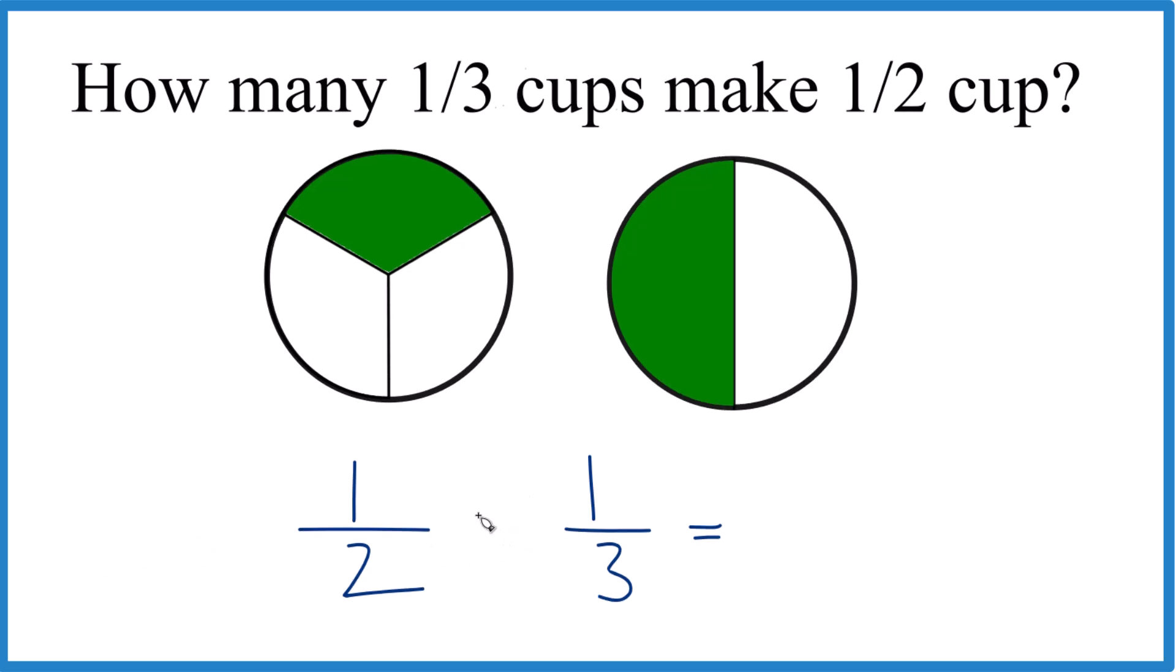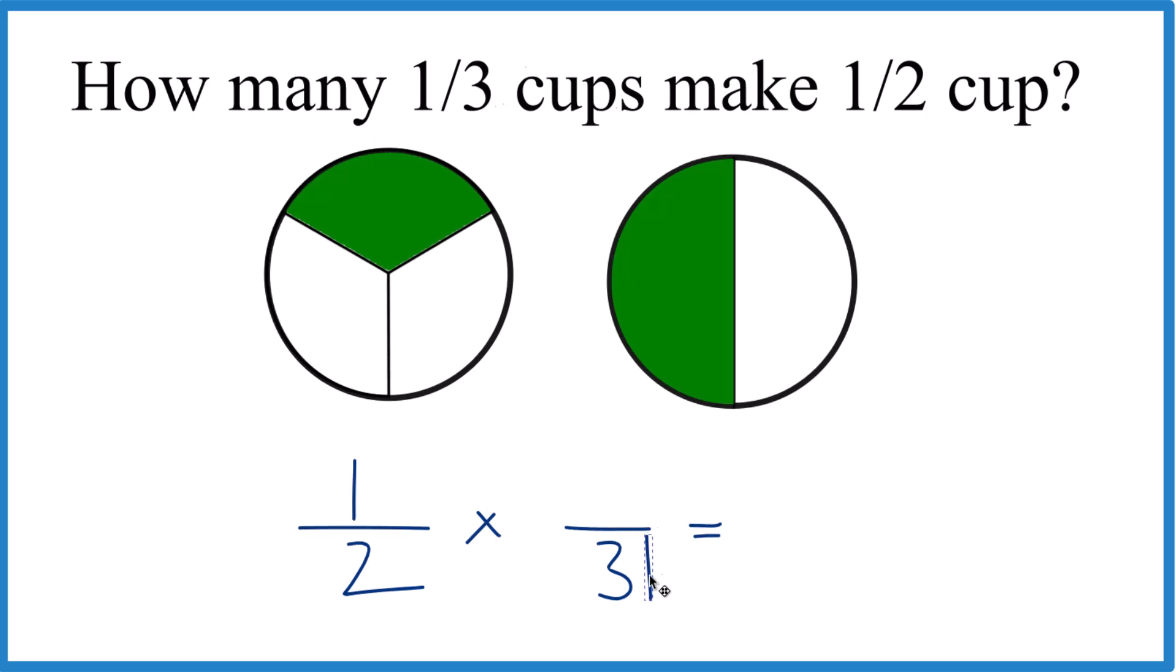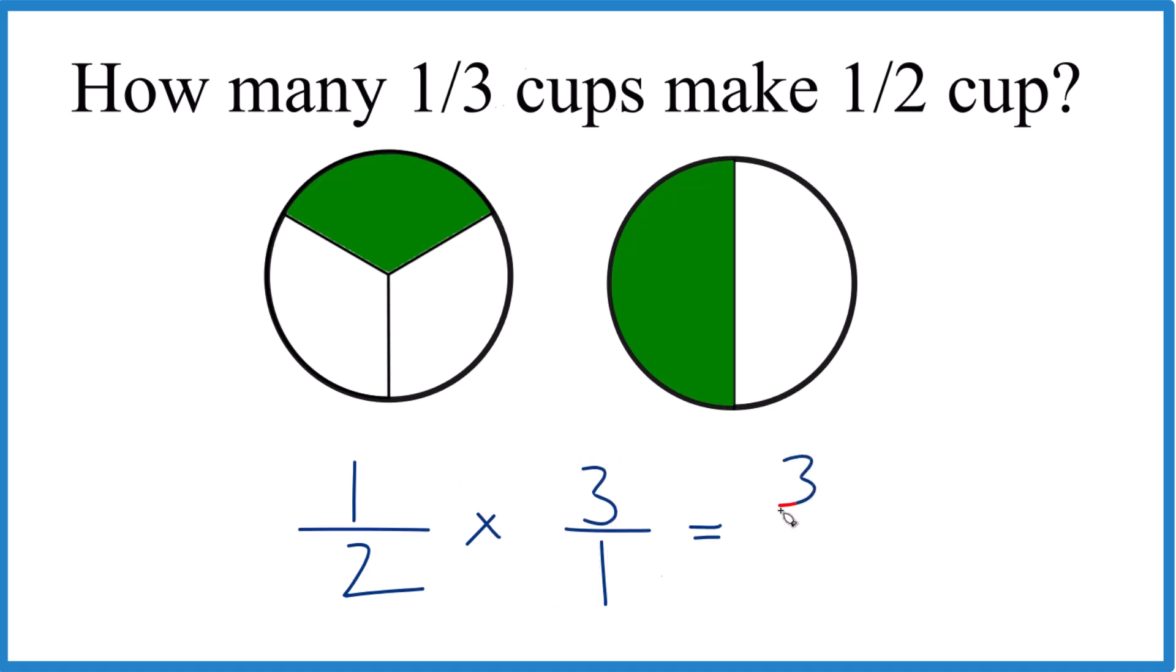So one-half times, and we're going to multiply it by the reciprocal of one-third. So we're going to move the one down and the three to the top. That's the reciprocal of one-third. Now we just multiply the numerators. One times three, that's three. Then the denominators, two times one is two.